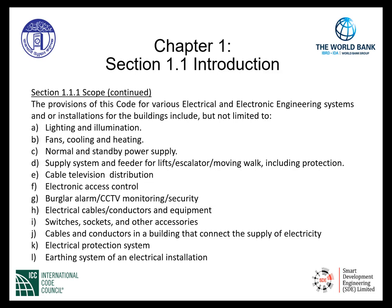Item D, supply system and feeder for lifts, escalators, and moving walks, including protection. Item E, cable television distribution. Item F, electronic access control. Item G, burglar alarm, CCTV monitoring, and security systems. Item H, electrical cables, conductors, and equipment. Item I, switches, sockets, and other accessories. Item J, cables and conductors in a building that connect the supply of electricity. Item K, electrical protection system. And item L, earthing system of an electrical installation.